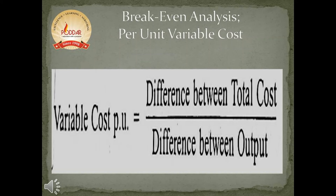Break-even analysis also involves per unit variable cost, which is calculated as the difference between total cost divided by the difference between the output. We can calculate variable cost per unit using this formula when values of total cost and output are given.